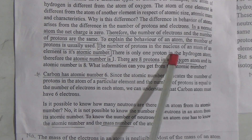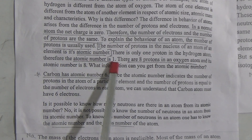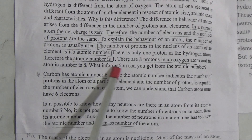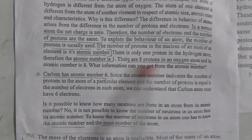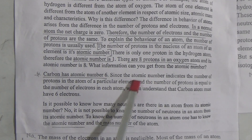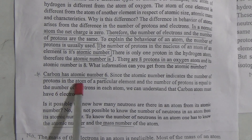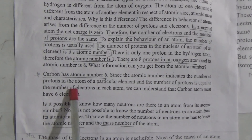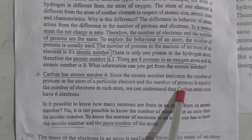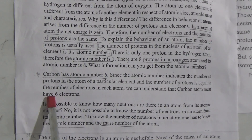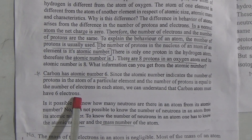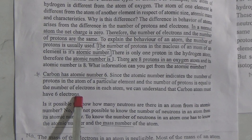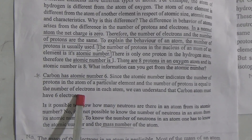There is only one proton in the hydrogen atom, therefore the atomic number is 1. There are 8 protons in an oxygen atom and its atomic number is 8. What information can you get from this atomic number? Carbon has atomic number 6. Since the atomic number indicates the number of protons in the atoms of a particular element, and the number of protons is equal to the number of electrons in each atom, we can understand that a carbon atom must have 6 electrons.